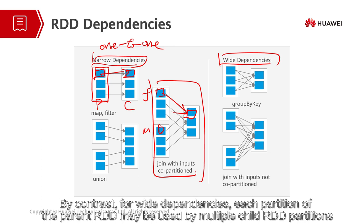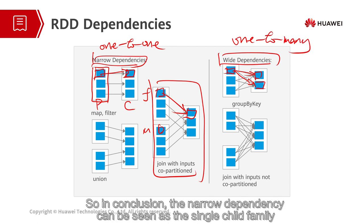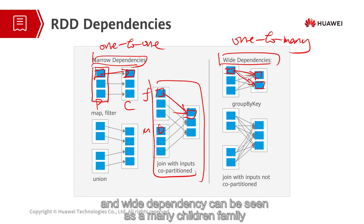By contrast, for wide dependencies, each partition of the parent RDD may be used by multiple child RDD partitions. Each parent partition in wide dependencies has more than just one child partition — it is one to many. So in conclusion, the narrow dependency can be seen as the single child family, and the wide dependency can be seen as a many children family.